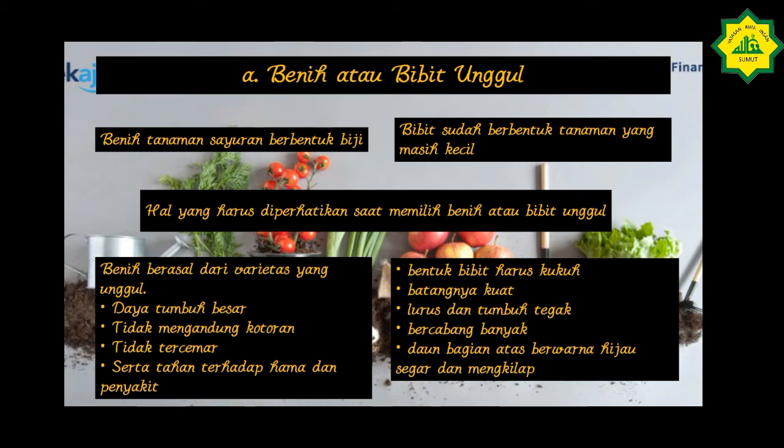Bentuk bibit harus kukuh, batangnya kuat, lurus, dan tumbuh tegak, bercabang banyak, serta daun bagian atas berwarna hijau segar dan mengkilap.